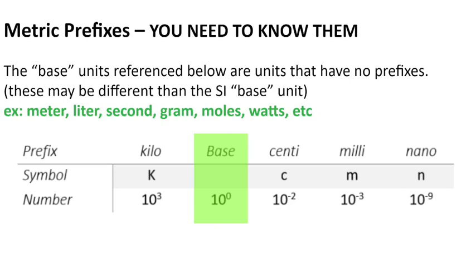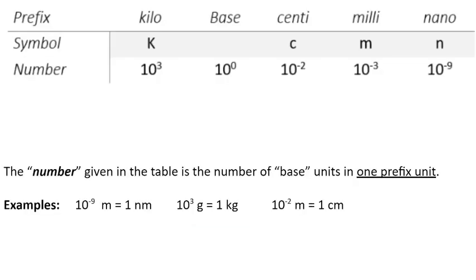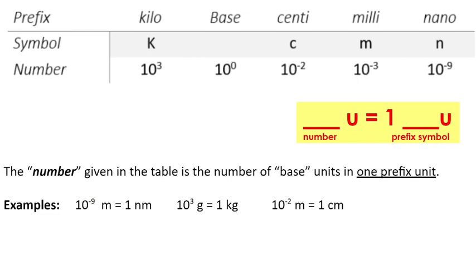We can put these prefixes in front of any units. Even though you don't know what a mole is, we have millimoles and nanomoles — we can put these prefixes in front of any unit that doesn't already have a prefix. When you're looking at this table of prefixes you need to memorize, you need to memorize the number for each prefix as well as the symbol. We're also going to have you write out unit equations that will help us when we're using them in dimensional analysis. This general format can help you as you're writing those unit equations.